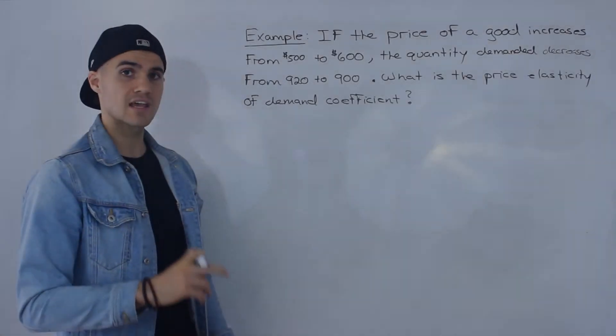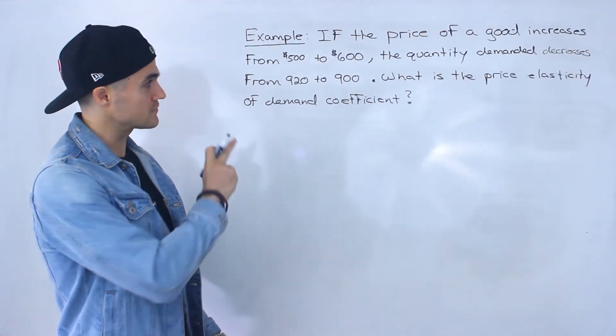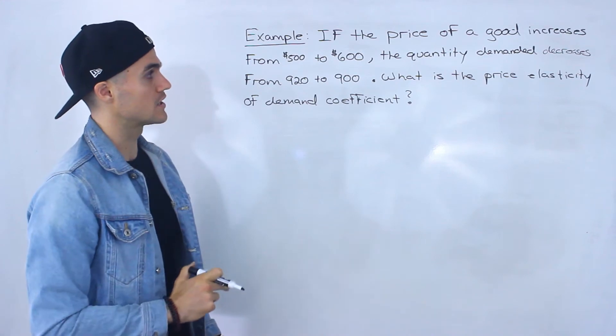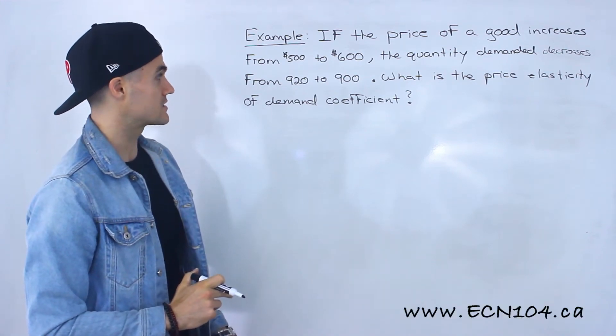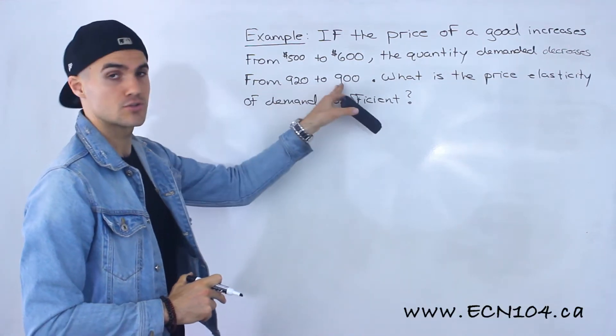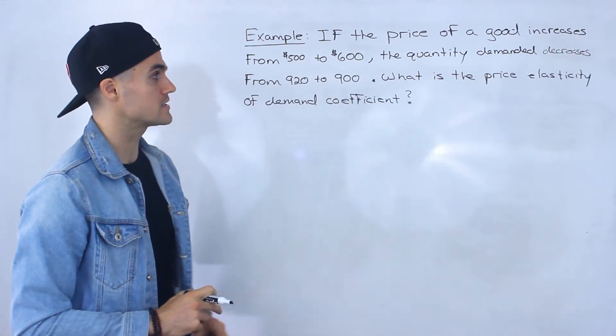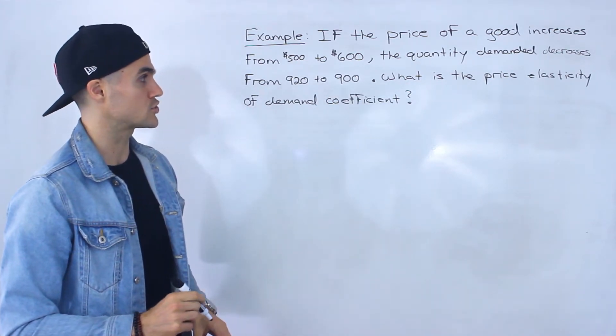Let's try another example. So let's say the price of a good increases from $500 to $600. The quantity demanded is going to decrease from $920 to $900. What is the price elasticity of demand coefficient?